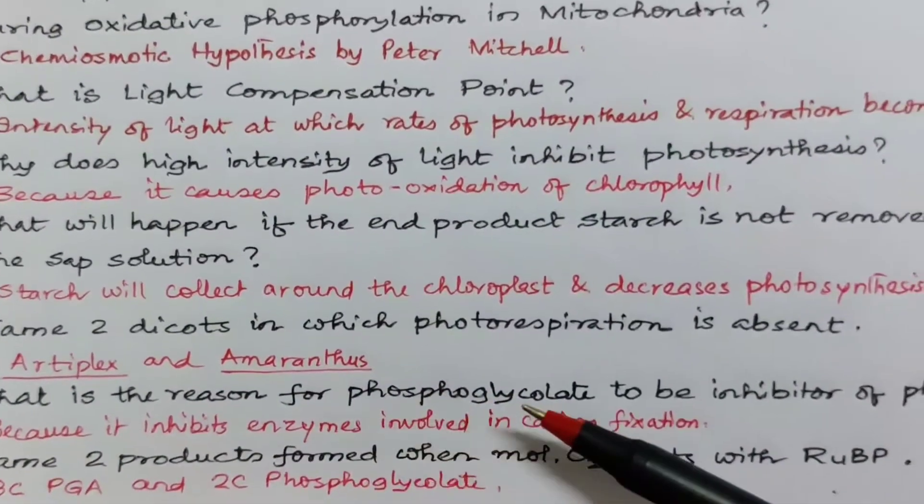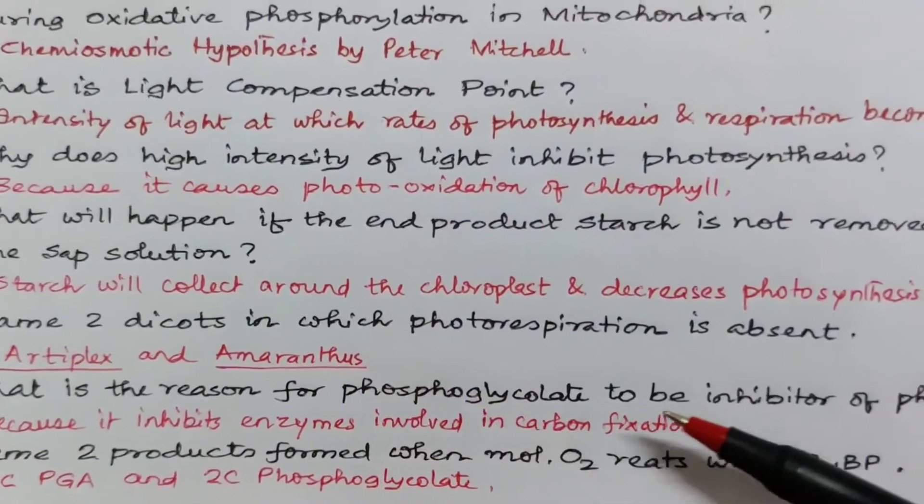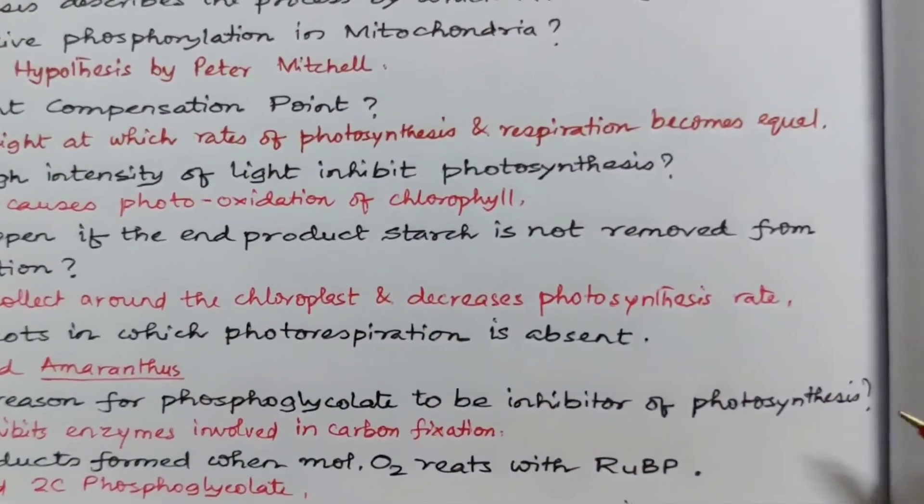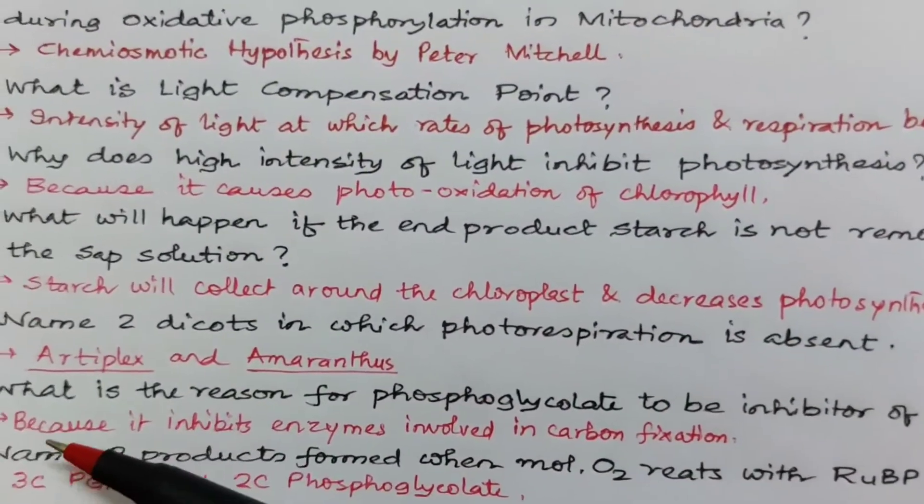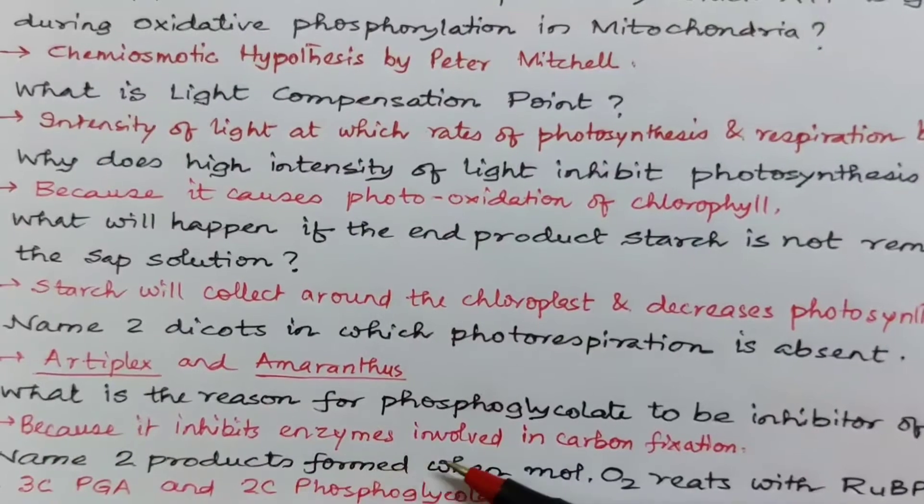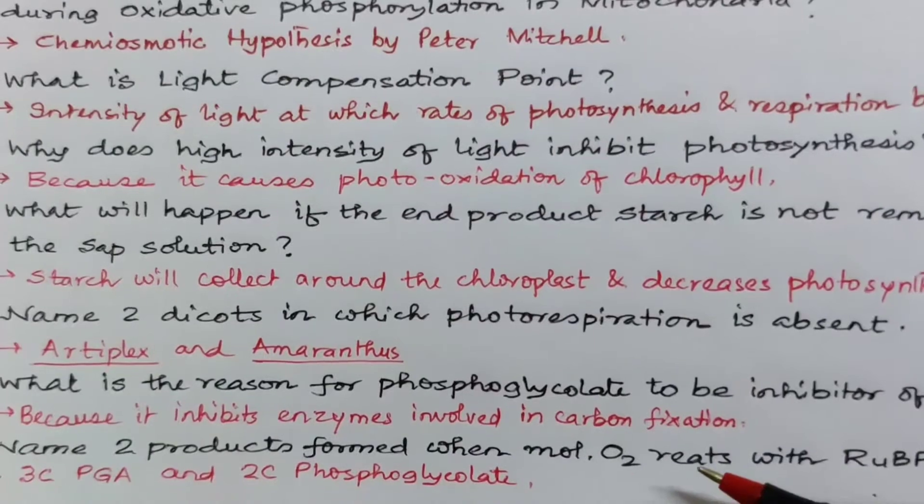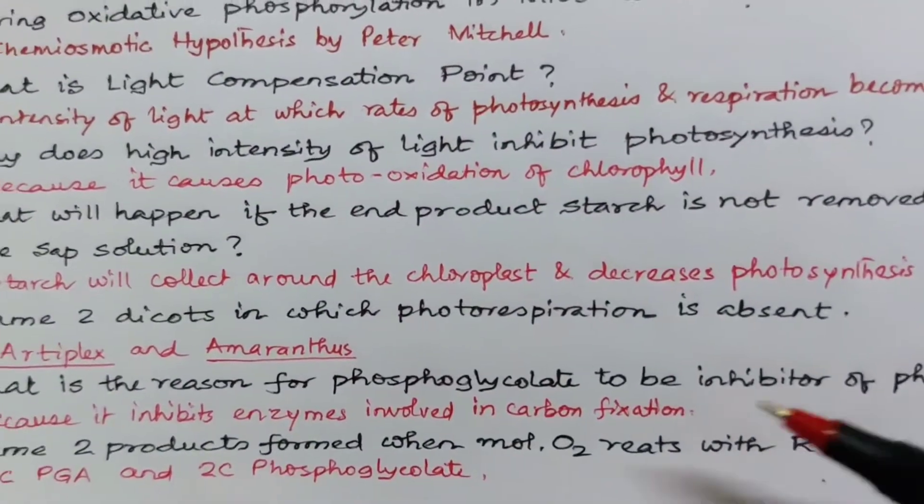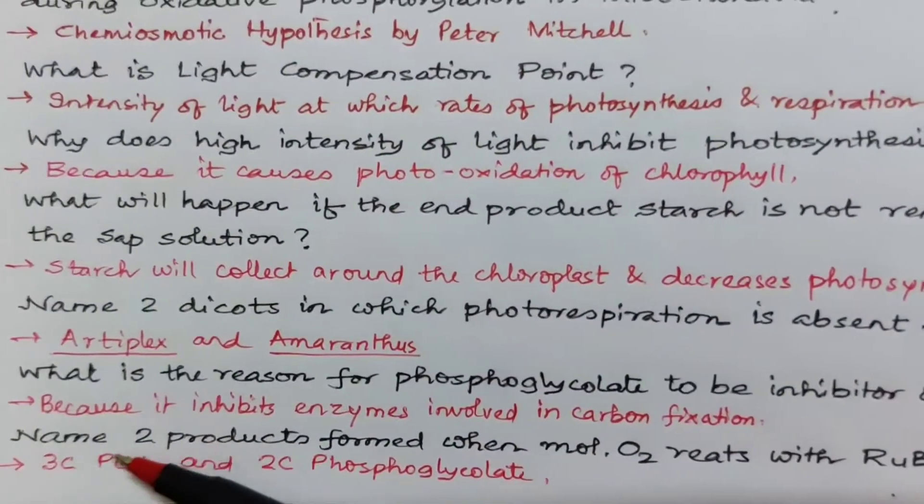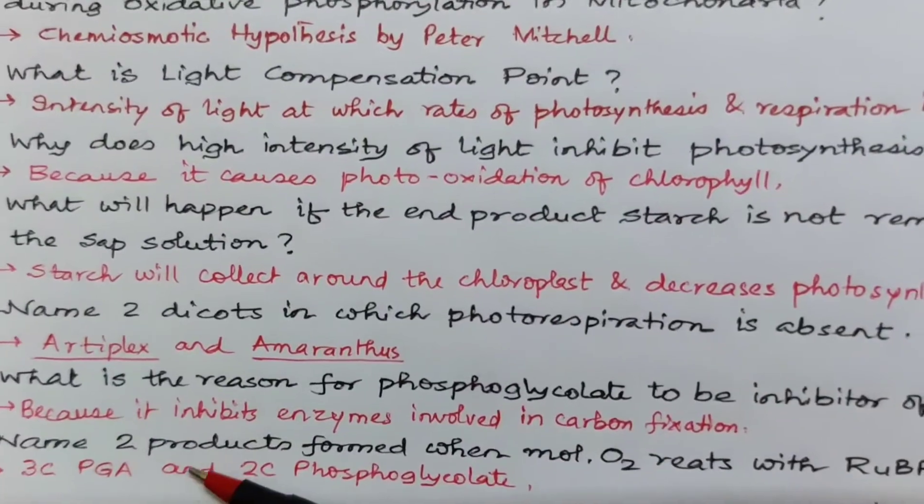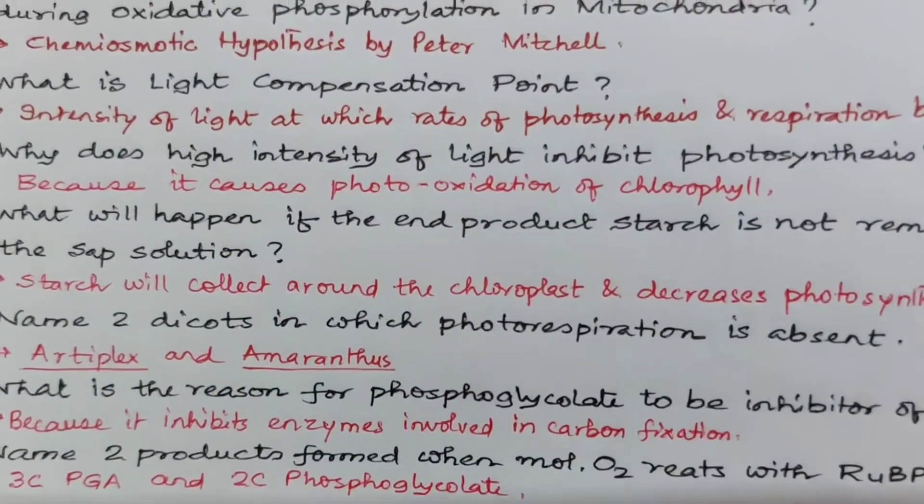What is the reason for photophosphoglycolate to be the inhibitor of photosynthesis? It inhibits enzymes involved in carbon fixation. Now two products formed when molecular oxygen reacts with RUBP. One is a three carbon compound PGA. Another is a two carbon compound phosphoglycolate.